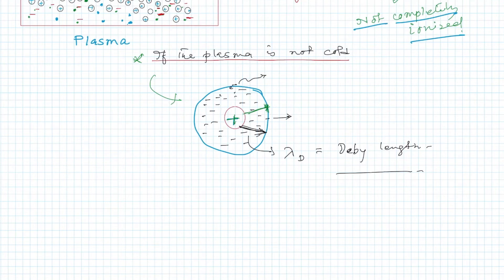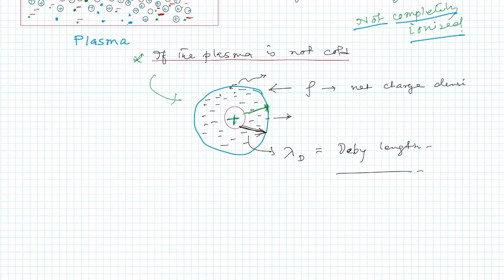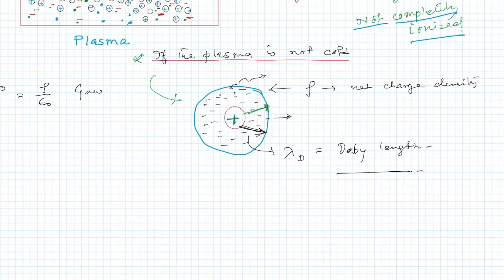Let us consider the charge density of this shielding sphere. Suppose rho is the net charge density. We know Gauss's law, which is given by del-squared phi equals rho by epsilon-naught.